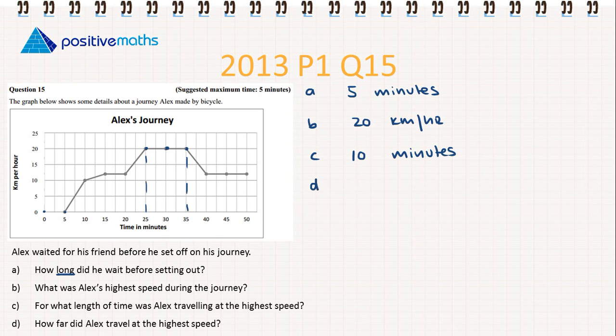And then on to part D. How far did Alex travel at the highest speed? So here we are looking for distance. I'm going to write up here our distance, speed, and time triangle. So if we're looking for distance, then we're going to multiply our speed by our time.